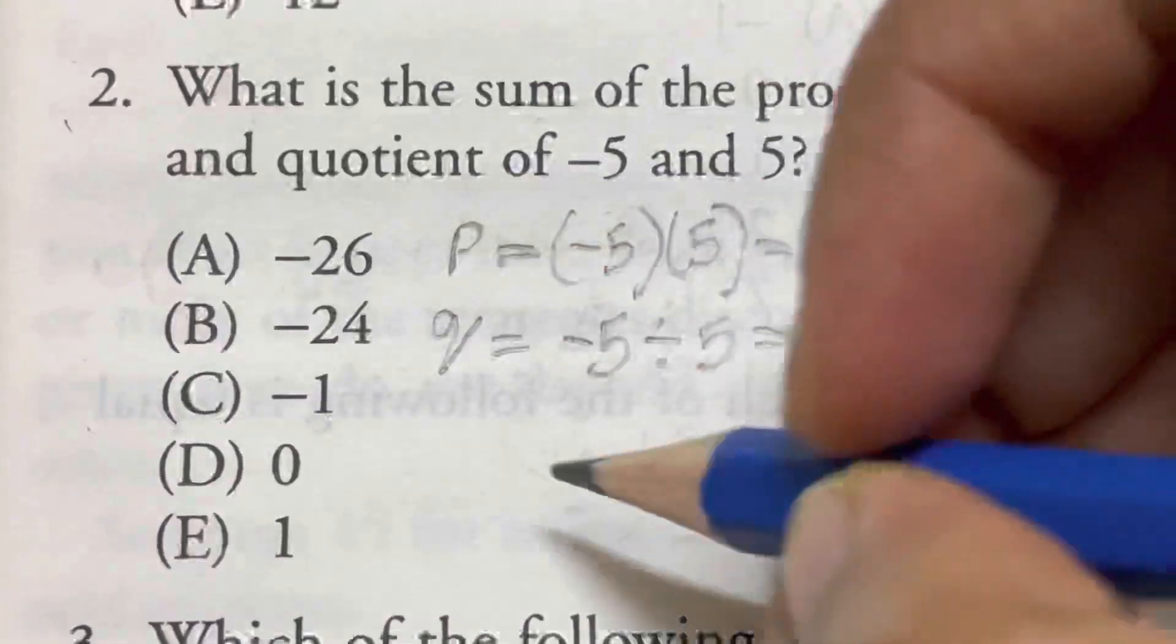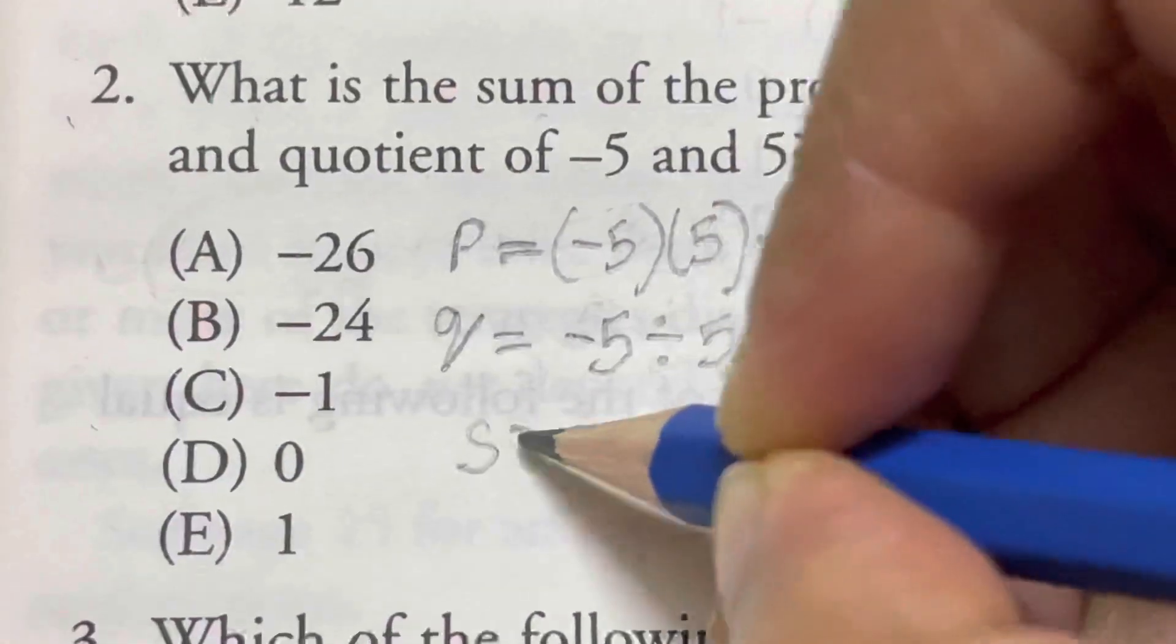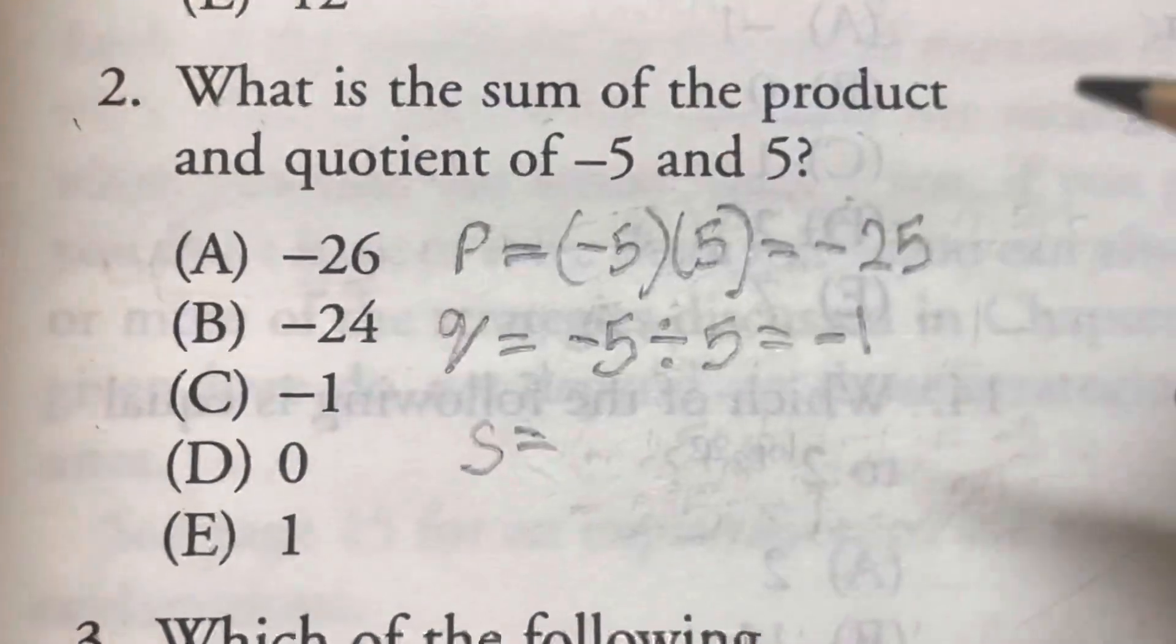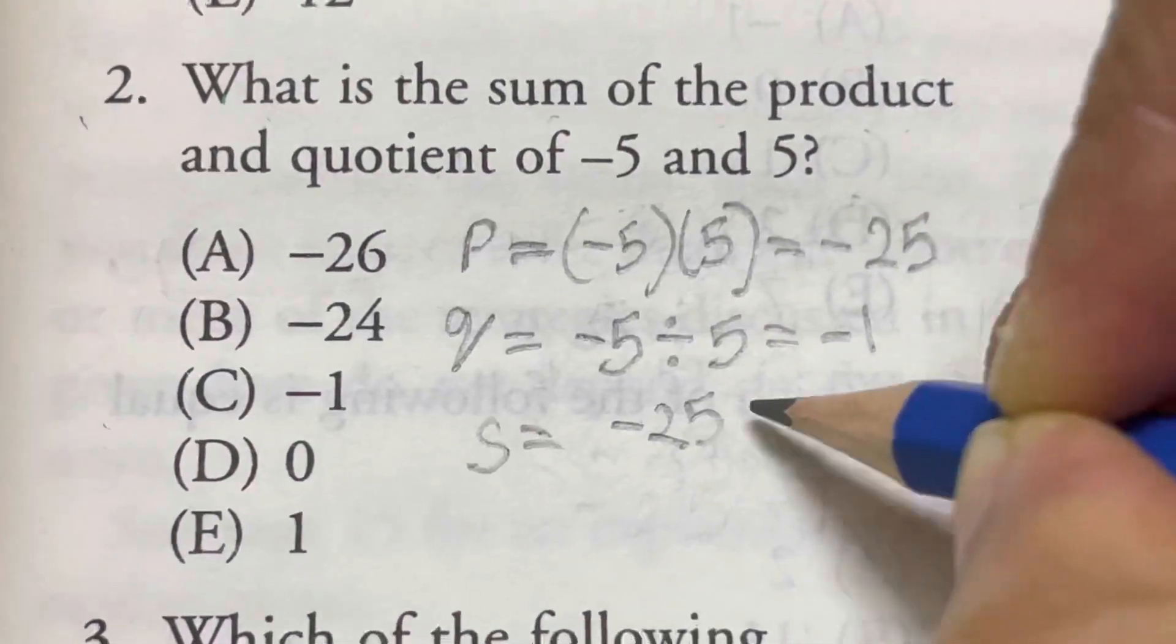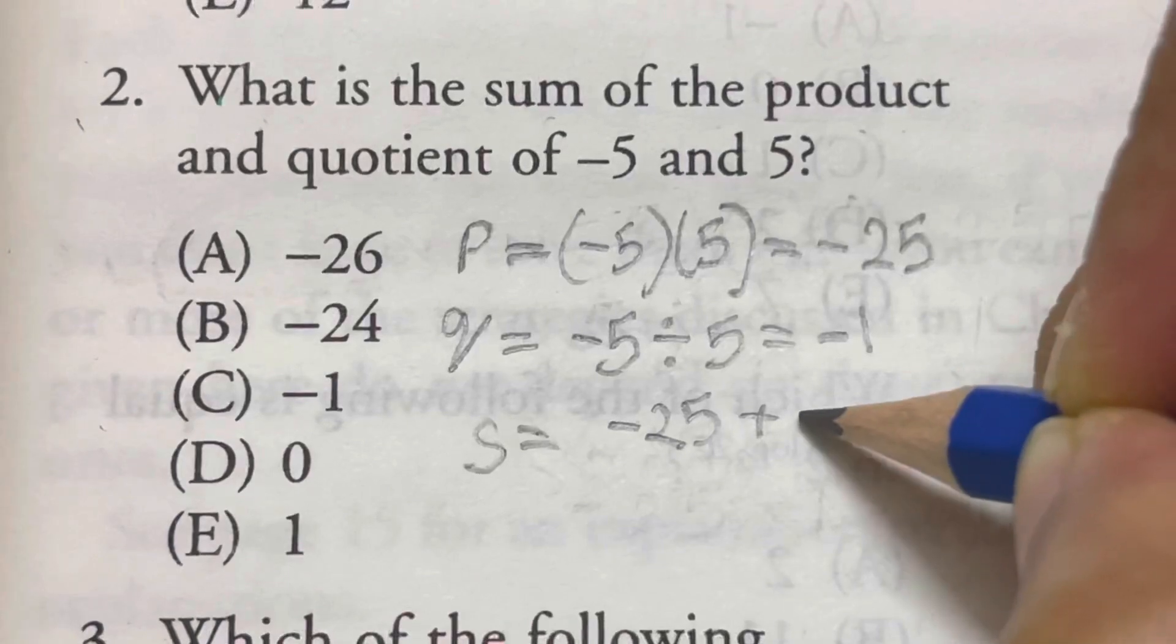So when you have the product, that is sum of the product and quotient. So sum of the product and the quotient is minus 25 plus of minus 1.